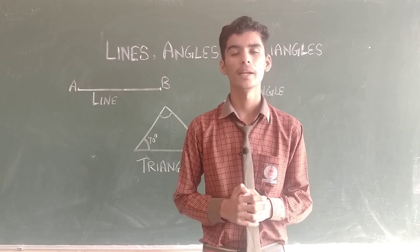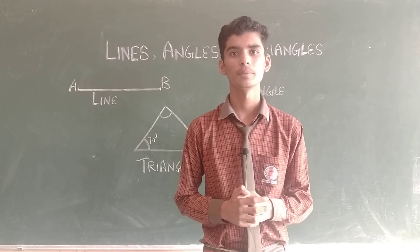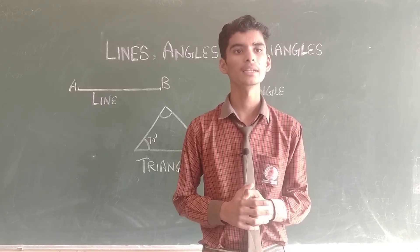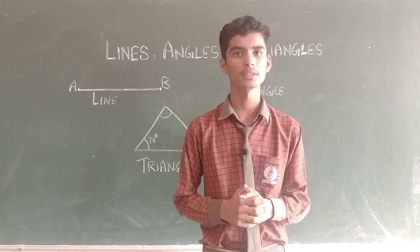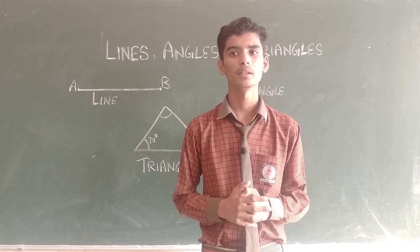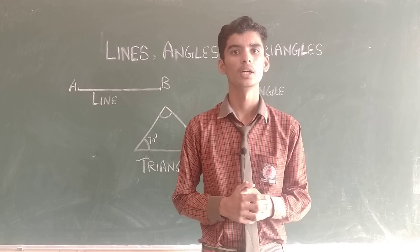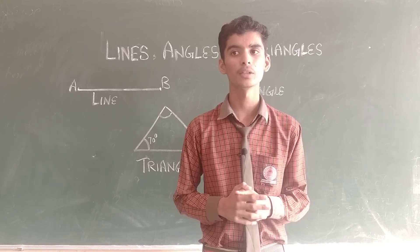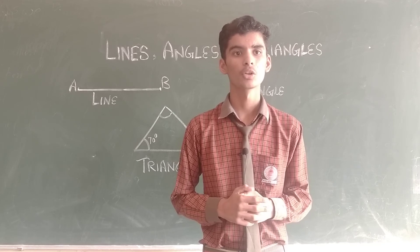Now I will tell you about congruency. A triangle is said to be congruent if all its sides and angles are equal. For example, in our daily life, if a bricklayer is making a wall, he uses bricks of the same size to provide strength to the wall. This is an example of congruency in daily life.